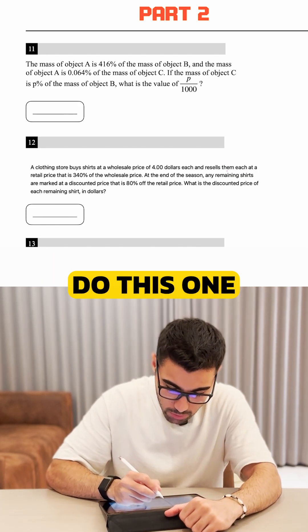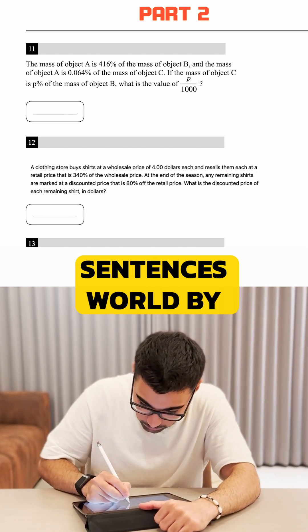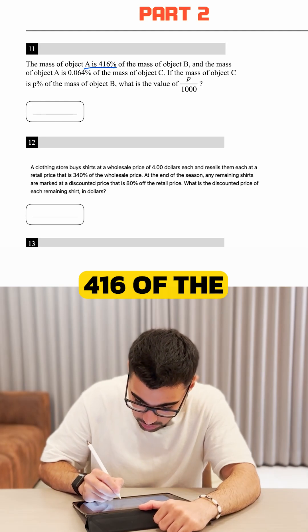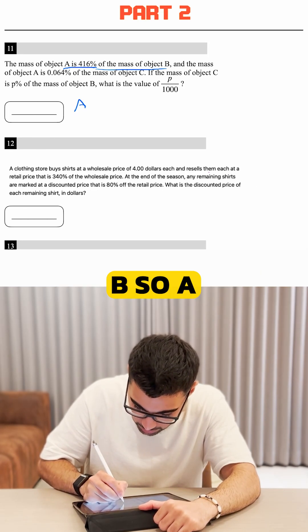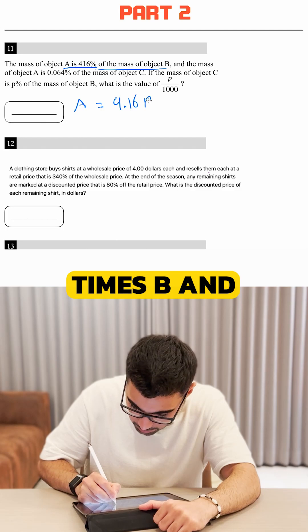So this is a percent question. How are we going to do this one? I'm going to translate the sentences word by word. A is 416% of the mass of object B, so A is 4.16 times B.